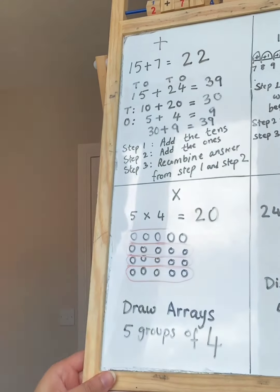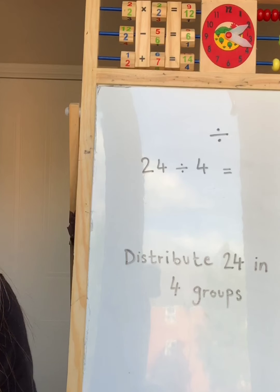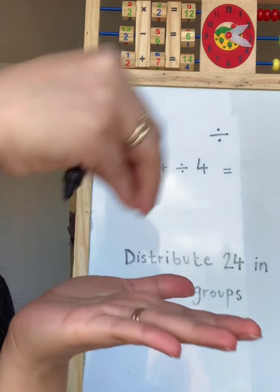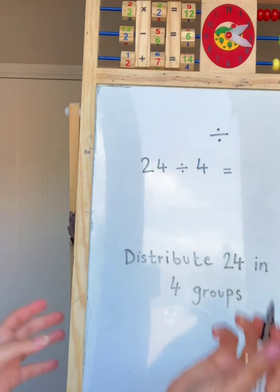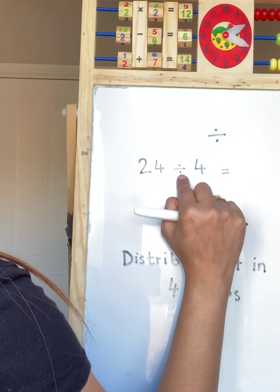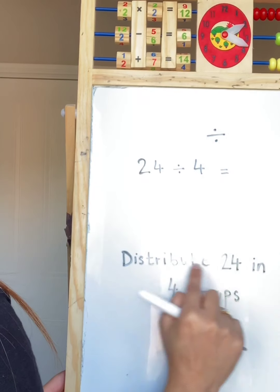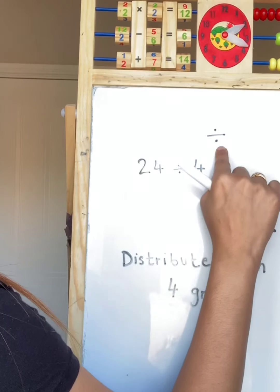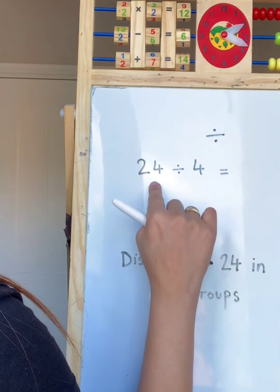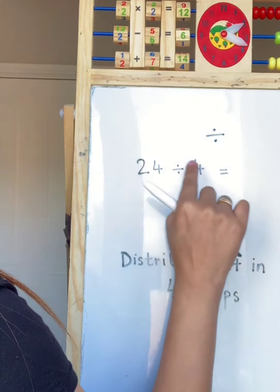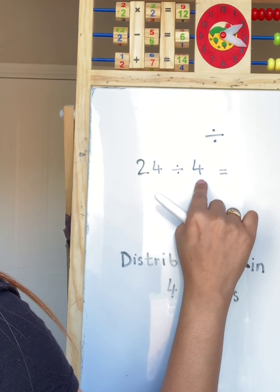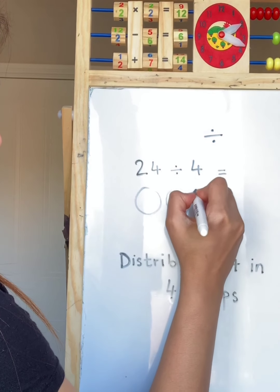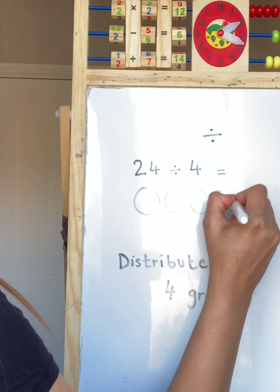Which is 20. Good job! Okay. The last one is division. Division is sharing. Our number sentence says 24 divided by 4. And it says distribute 24 in 4 groups. Distribute, divide. If I had 24 sweets, how would I share it with 4 friends? I'm going to draw my 4 friends. 1, 2, 3, 4.